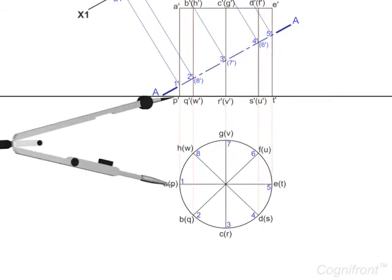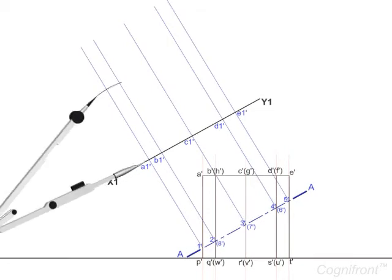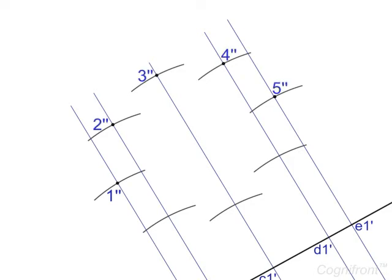Next, measure the distance P' 1' and mark it on the line 1' A1' to obtain the point 1'' (double dash). Similarly, obtain points 2'', 3'', 4'', 5'', 6'', 7'', and 8''.